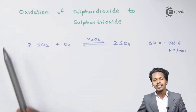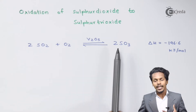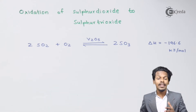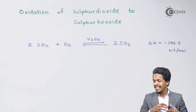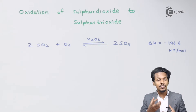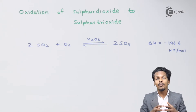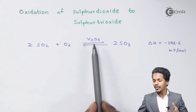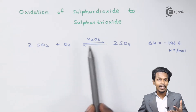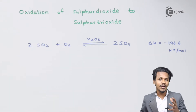To perform this step, some precautions must be taken: there should be no dust particles and no other particles that could poison the reaction. That is why V₂O₅ is used as a catalyst. This was the second step, and now let me talk about the third step.